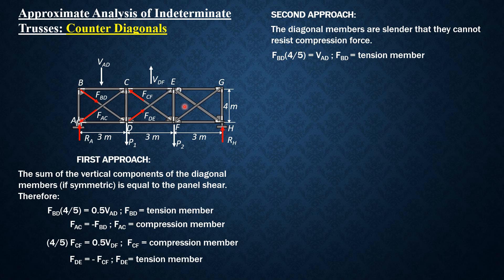The vertical component of FBD is the only active tension diagonal, because member AC is in compression. Imagine the diagonal members are made of ropes — if FAC is in compression, it carries no force. Only BD will carry force. Therefore, the vertical component of FBD, the only active tension diagonal, is equated to the full panel shear. It is a tension member, and FAC is zero.